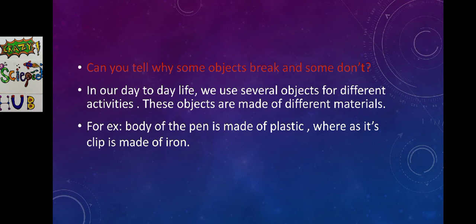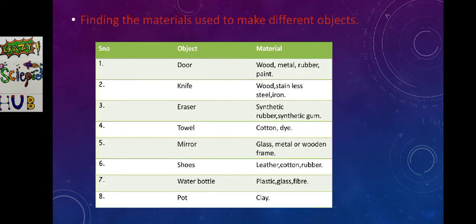Can you tell why some objects break and some don't? In our day to day life, we use several objects for different activities. These objects are made up of different materials. So some objects are breaking and some are not. For example, the body of a pen is made up of plastic whereas its clip is made up of iron.